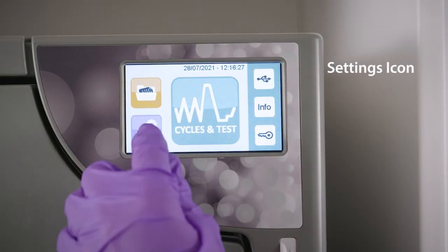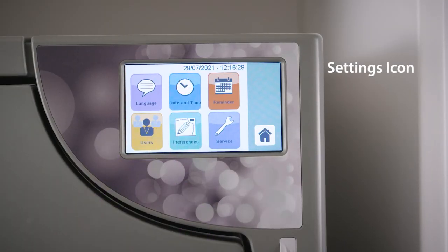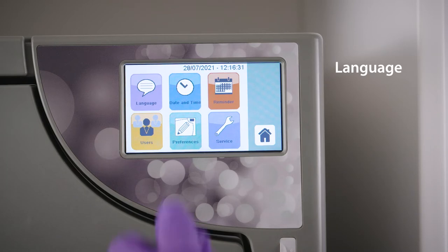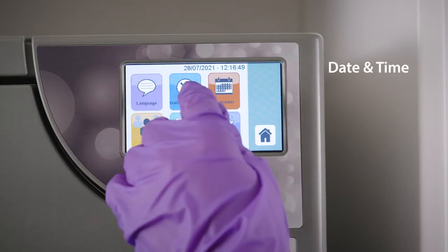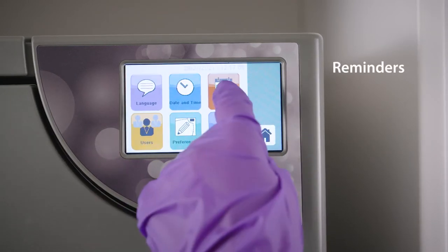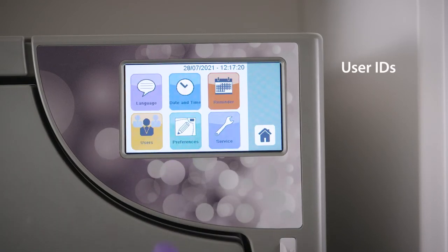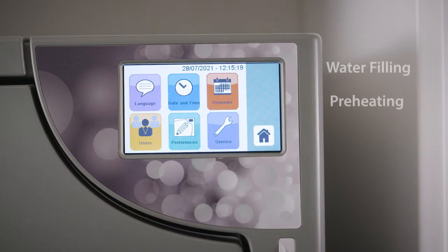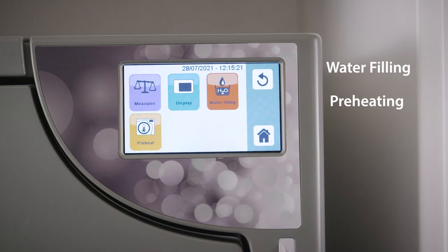Lastly, the Settings icon allows you to adjust the user settings. Features such as language, date and time, automatic reminders, user IDs, water filling settings, and preheating options are explained in detail in your operator's manual.